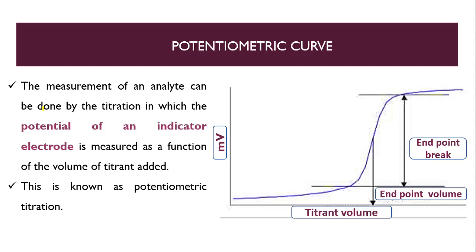So it is a measurement of an analyte, which can be done by titration. As we are doing normal titration, here you can assume the same type of titration, but what is the difference? Here we are measuring the electrodes and the potentiometer, as I discussed in my previous lecture. You can go for it and see what is the basic difference in normal titration and potentiometric titration.